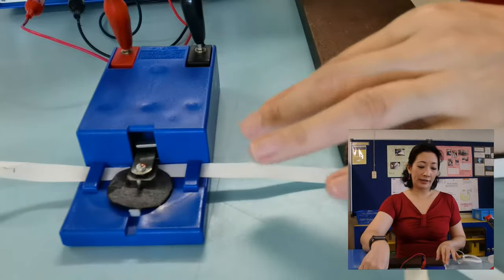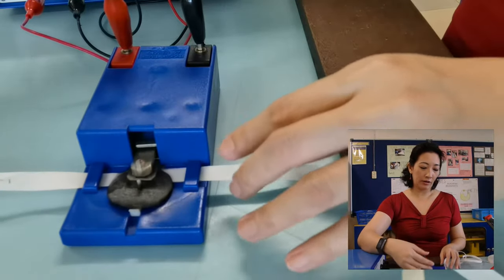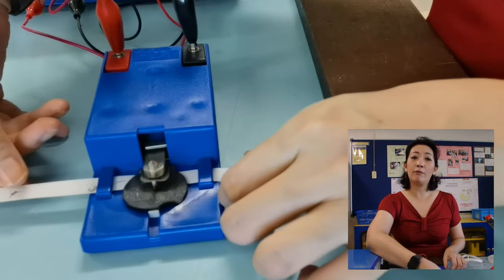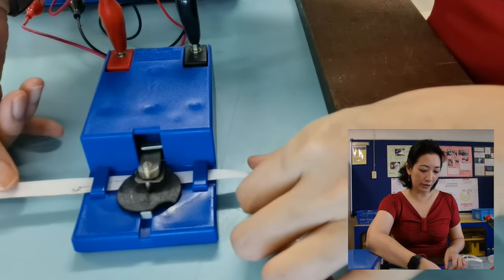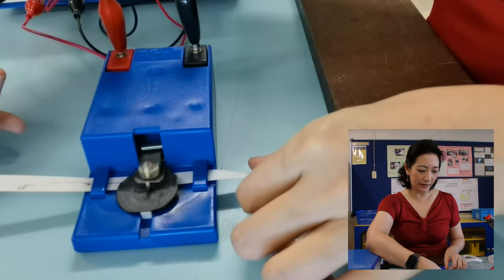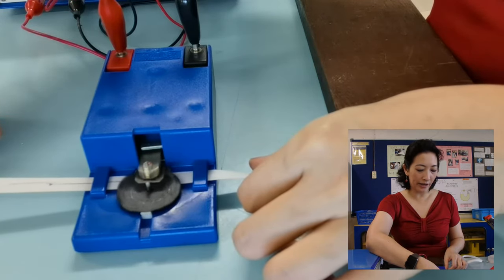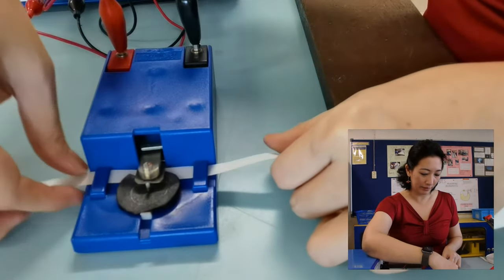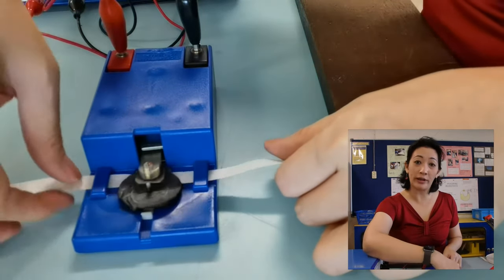Before we start the experiment, allow me first to show you how the ticker timer works with different types of motion. If the ticker tape is not moving, obviously the dot is stationary. It's made on the same spot. If we move the tape slowly, you can see that the dots are very near each other. The faster we pull the tape, the larger the spacing between the dots.